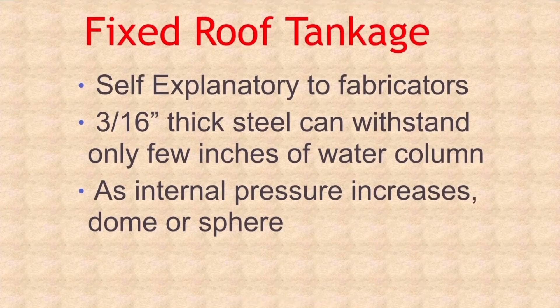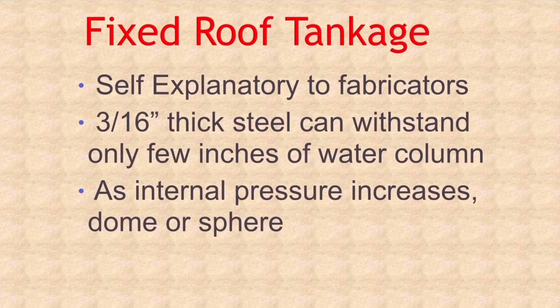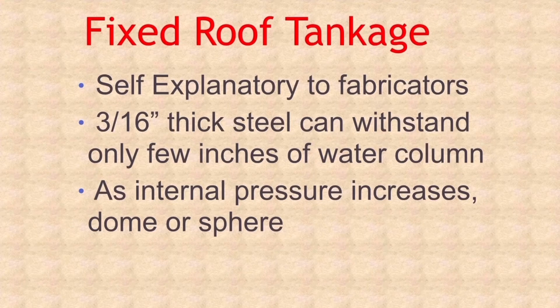Fixed roof tanks. The roof shape of a tank may be used to classify the type of the tank and it is instantly self-explanatory to the fabricators. A cone roof tank is built with 3 by 16 inch thick steel and it cannot withstand more than a few inches of water column.